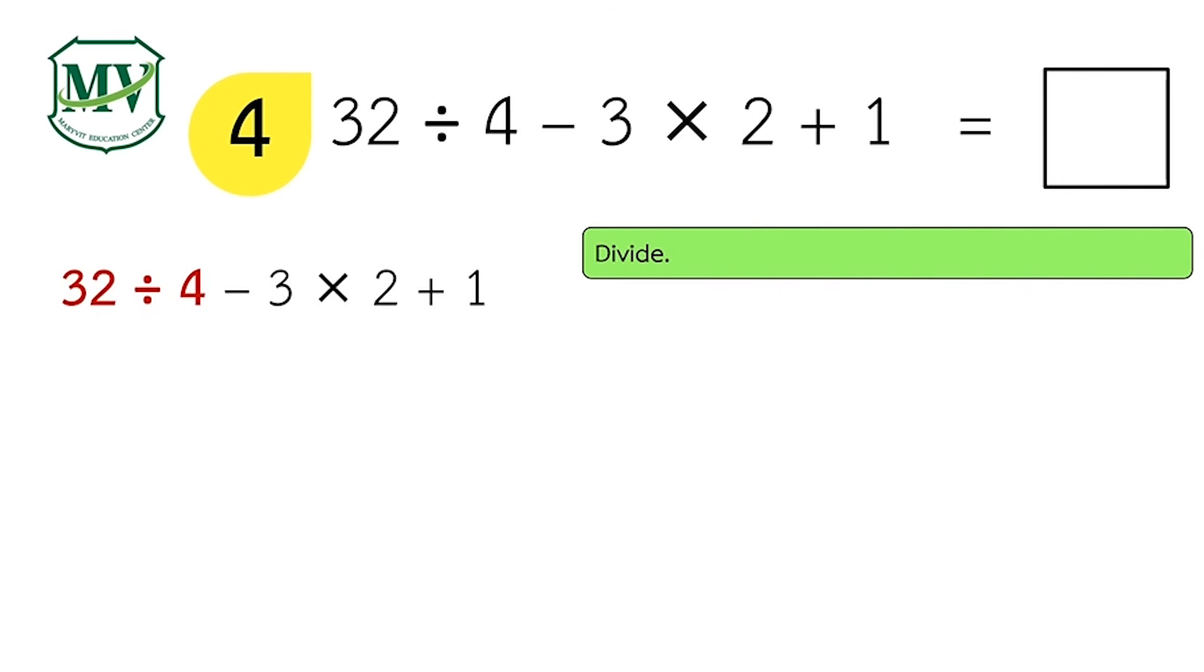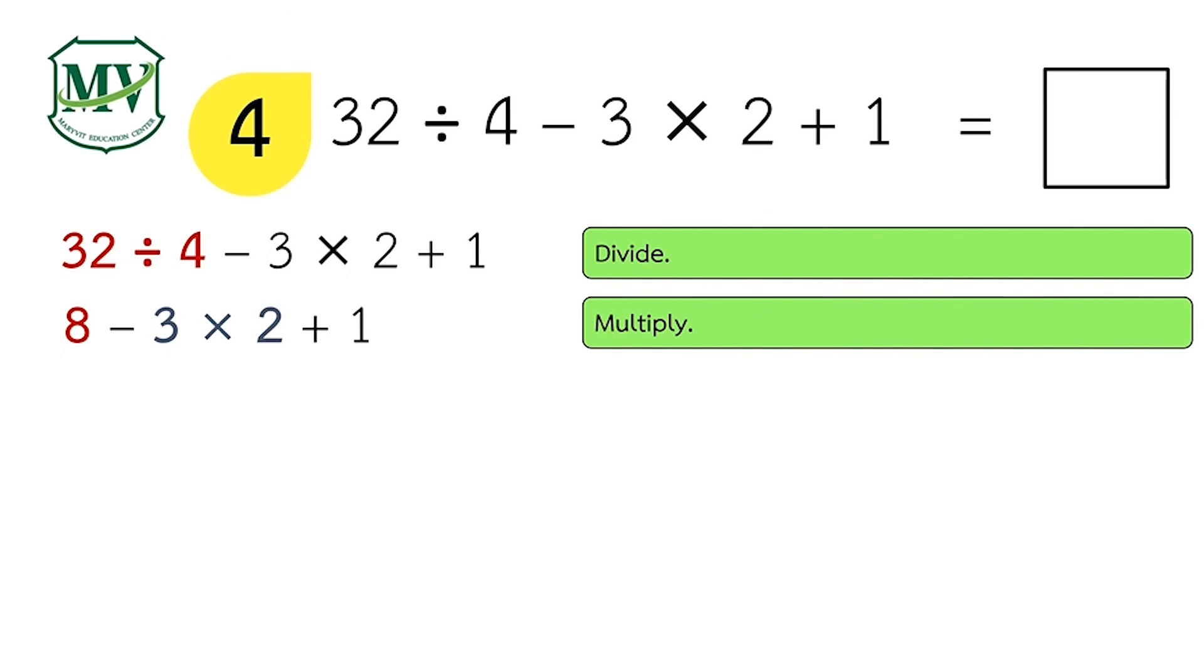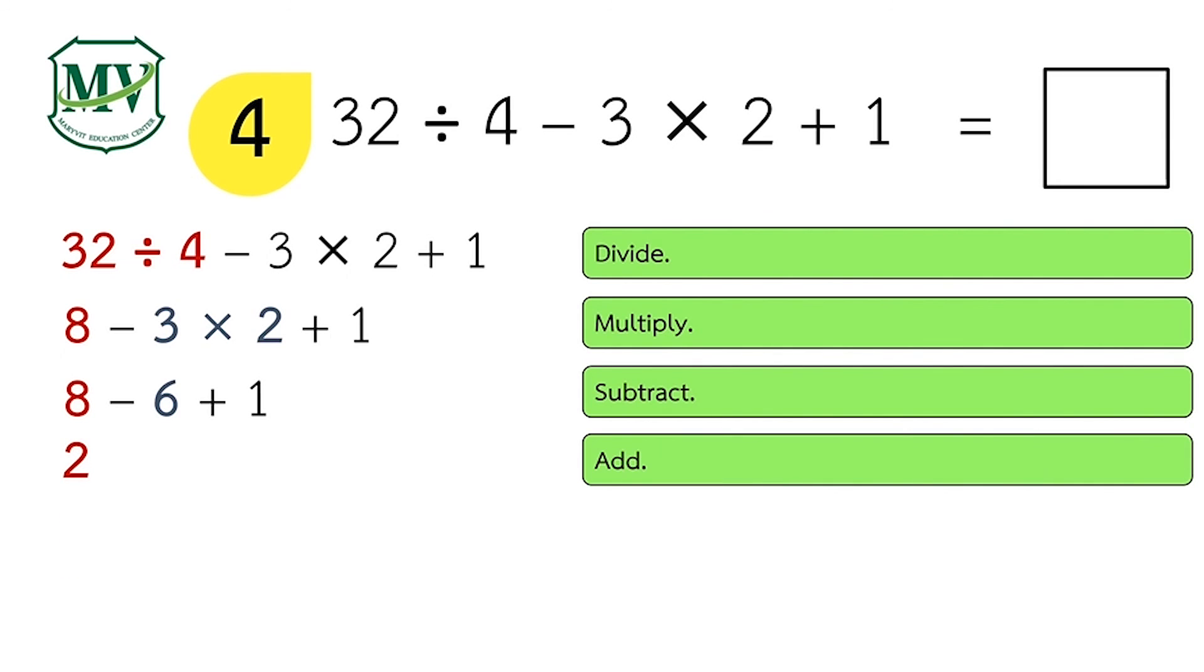First, 32 divided by 4 is equal to 8. Next, 3 times 2 equals 6. Then, 8 minus 6 equals 2. Lastly, 2 plus 1 equals 3. 3 is the final answer. Did you get the correct answer? Good job!